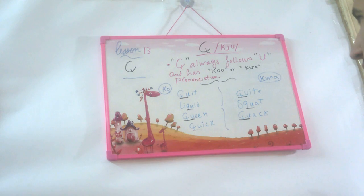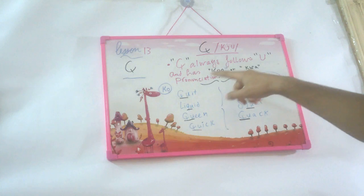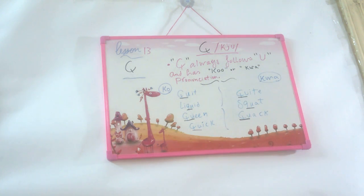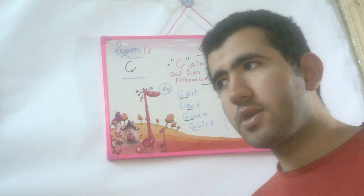Today we're going to talk about a very simple lesson. It's about the letter Q, which has the sound of 'kw' or 'k'. Both are actually the same, but it depends on the vowels that come after or in the words. Q always follows U and has a 'kw' or 'k' pronunciation. Remember, Q always follows U.